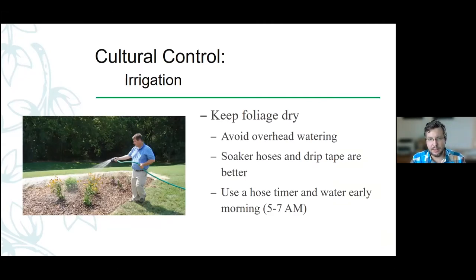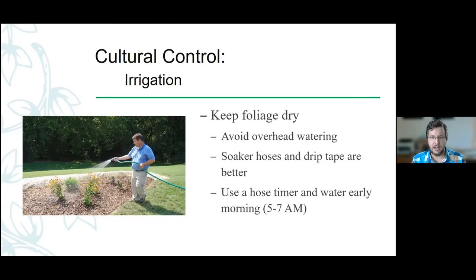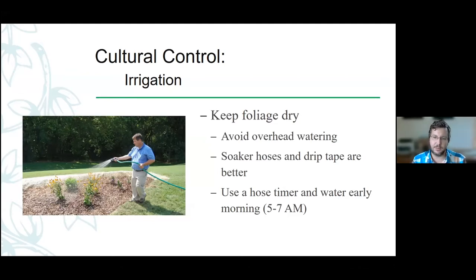How we irrigate and water our plants can really have a big effect on how our diseases come about. Pathogens really need free water sitting on top of the plant surface to infect. By keeping that foliage as dry as possible and minimizing how often the foliage gets wet, we can help lower the incidence of disease. So really want to avoid any overhead watering. If you can use soaker hoses and drip tapes, they're much better. If you have to hand water, go in with a hose and water at the base of the plant, minimizing soil splashing up and not getting foliage wet.